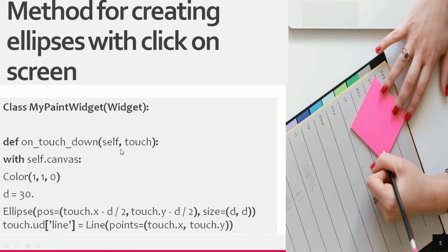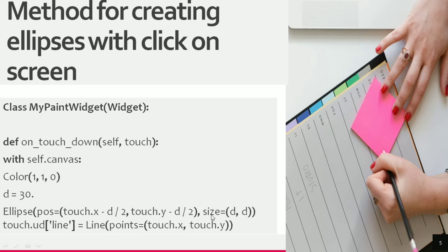Once the method is created, inside it we define with self.canvas, and inside the canvas we define the color code and the dimension as d equals t, and color as (1, 1, 0) which is yellow. You can also set red, blue, or green as you want. Lastly, we define the Ellipse providing the position as touch.x minus d divided by 2 and touch.y minus d divided by 2, and the size as d comma d.